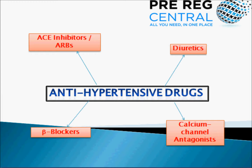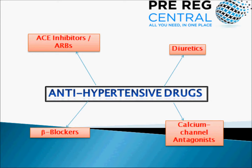Beta blockers are contraindicated in patients with second or third degree heart block. They can also trigger bronchoconstriction and should usually be avoided in patients with a history of asthma. You should also be aware of common side effects such as fatigue, cold extremities, as well as being able to mask the symptoms of hypoglycemia. Finally, according to the BNF, the only beta blocker which is thought to be safe during pregnancy is labetalol.